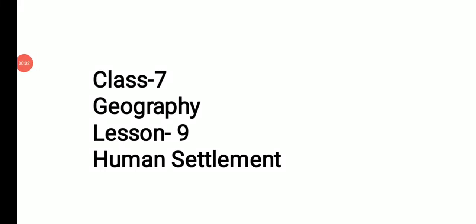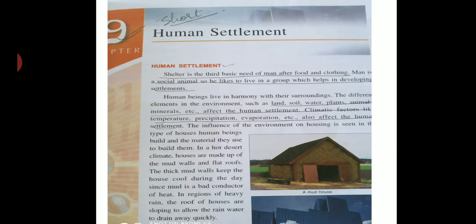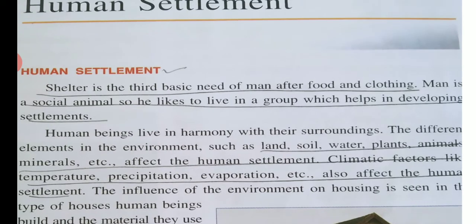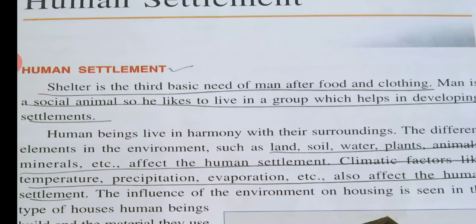Good morning everyone. This is Class 7 Geography, Lesson 6 - Human Settlement. This is a chapter which I have made short because most of the topics were discussed in Class 6. Human settlement means shelter - a place for us to live our life. Food, clothing, and shelter are the three basic needs. We are social animals, so we need to develop things for living.